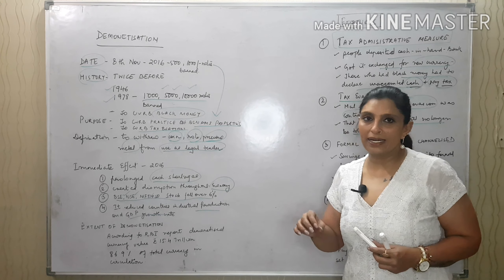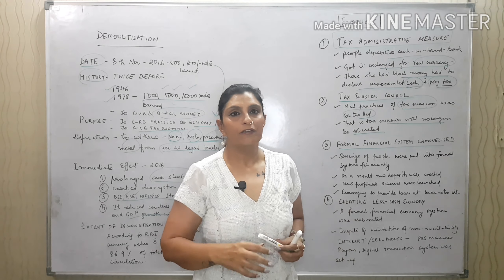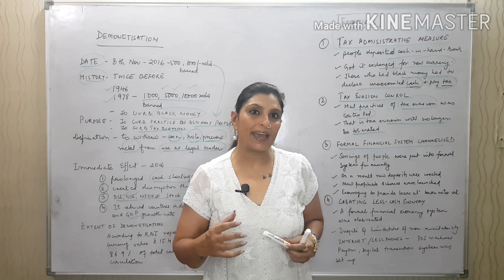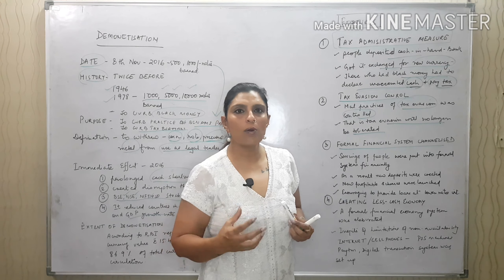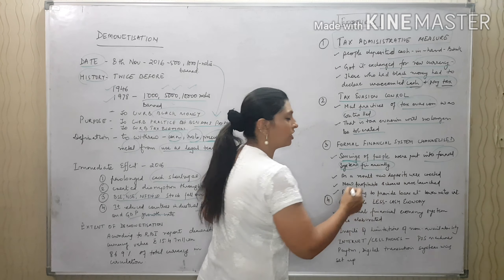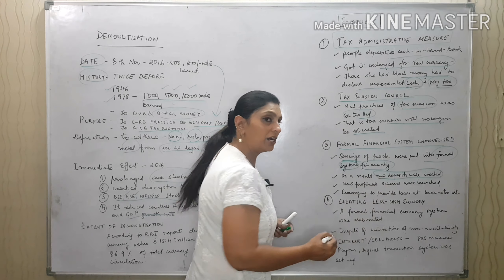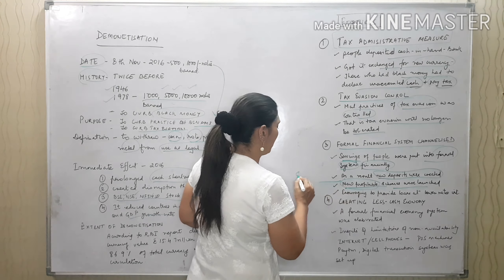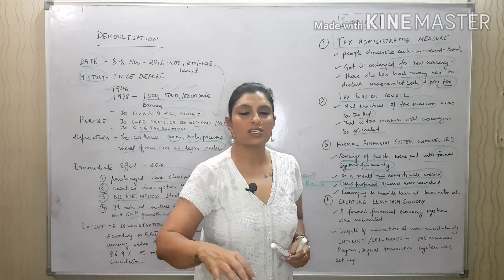The third feature was that a formal financial system was channelized. India did not have a proper formal financial system — people kept money at home or in lockers without declaring income. Now, savings were put into the formal banking system. People had to be financially dependent on banks. New deposits were created, and new profitable schemes were launched by banks and the government.